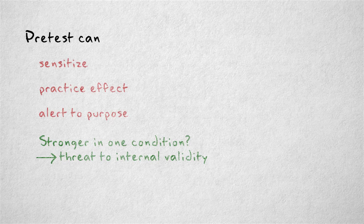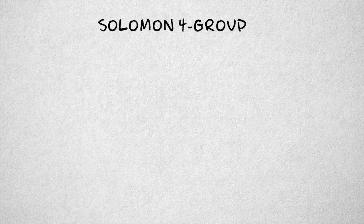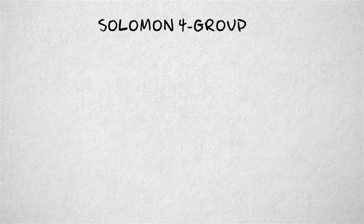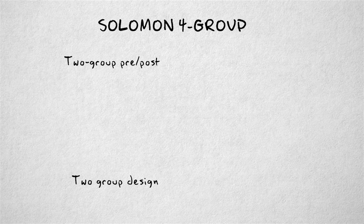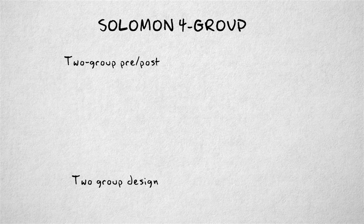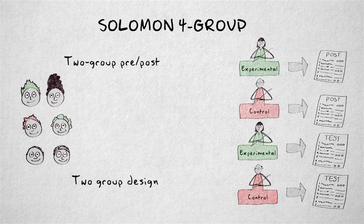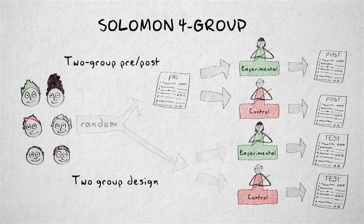But there's a way to take such unwanted effects of a pretest into account by using a Solomon four-group design. This is a combination of the two-group design and the two-group pretest-posttest design. The experimental and control condition are run twice, once with a pretest and once without.